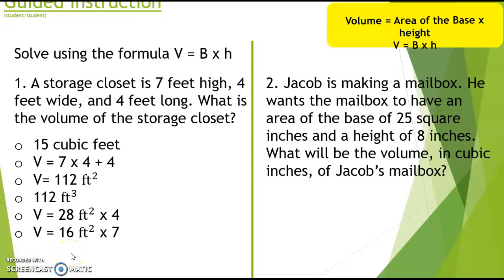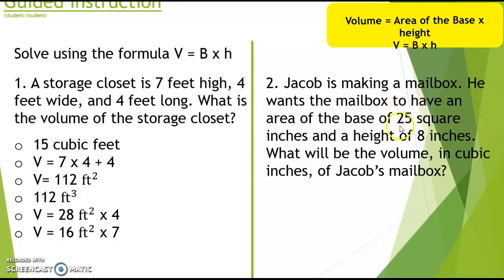On your piece of paper, pause the video and solve these two problems. For the first problem, you should have found the area of the base first — width times length, four times four — giving you sixteen square feet, times the height of seven. That's sixteen square feet times seven feet. For problem two, Jacob is making a mailbox. The area of the base is already calculated — twenty-five square inches — and the height is eight inches. You should have multiplied twenty-five times eight to get the volume, which is two hundred cubic inches.